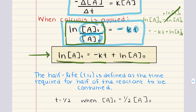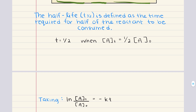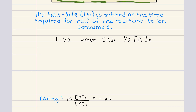Let's move on to the concept of half-life. The half-life is defined as the time required for half of the reactant to be consumed — in other words, the time it takes for the concentration of a reactant to decrease to half of its original value. To find the half-life for a first-order reaction, we substitute the concentration of A at time t with one-half the initial concentration of A and replace this into our first-order expression.